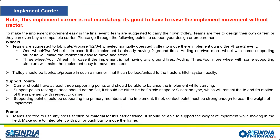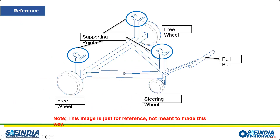The implement carrier is not costly, and once your implement is ready you can plan it accordingly. The reference image is just a guide — you need supporting points and some tires to take the weight of the implement, a front steering tire, and a pull rod. Make sure the hitch mechanism height on the carrier matches the tractor hitch points so they align properly when the tractor couples with the implement.